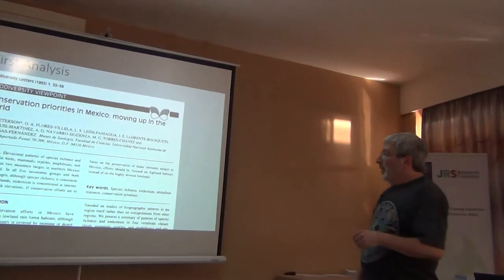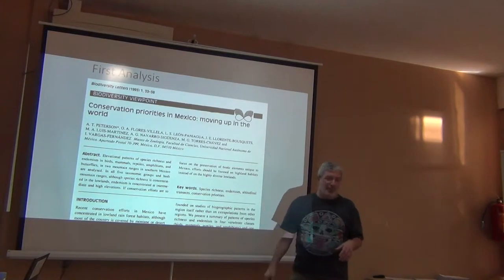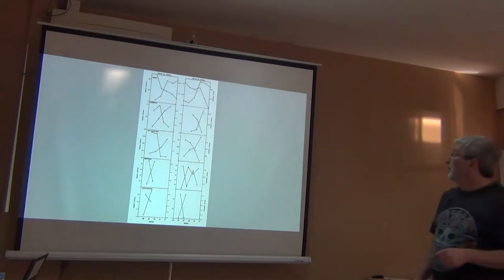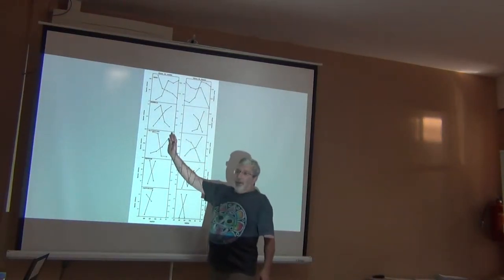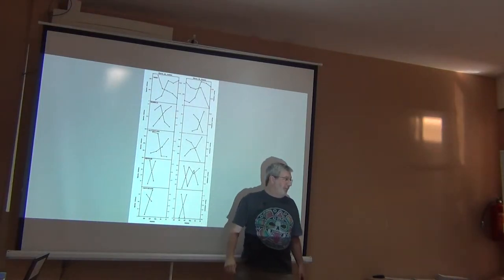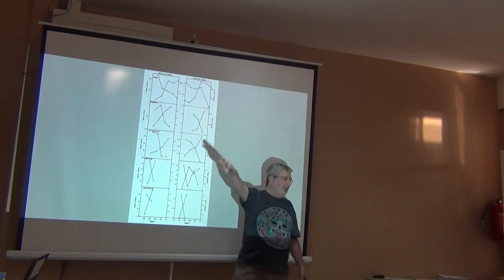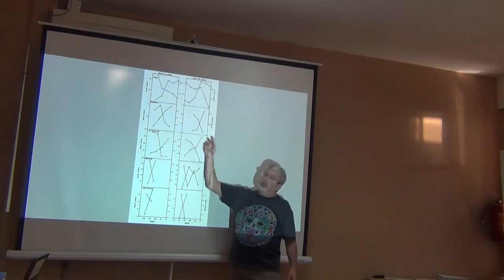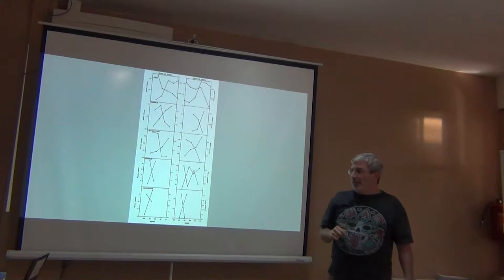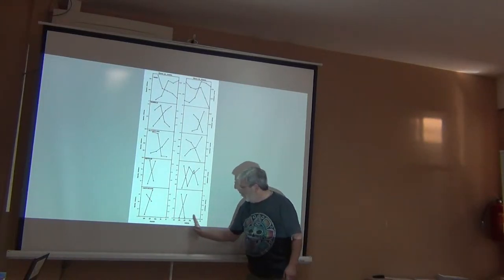I got some colleagues together and we prepared this paper, based on two five-taxon inventories that we had done. This one, Sierra de Juarez, is in the eastern shield, looking towards the Gulf of Mexico. And this one, the Sierra de Atoyac, is on the western slope, right above Acapulco in the mountains. You're going from lowland to highland in both cases.